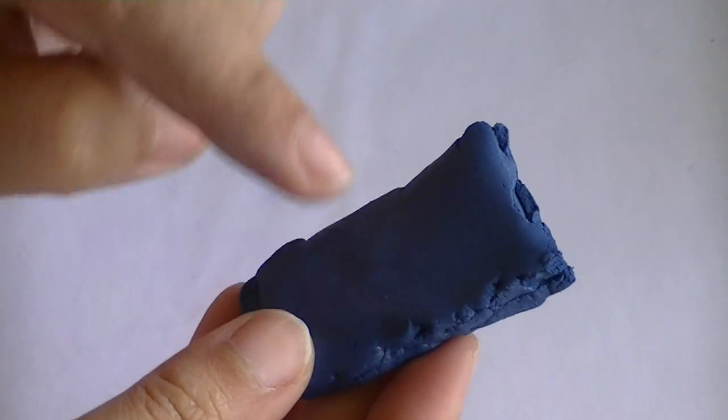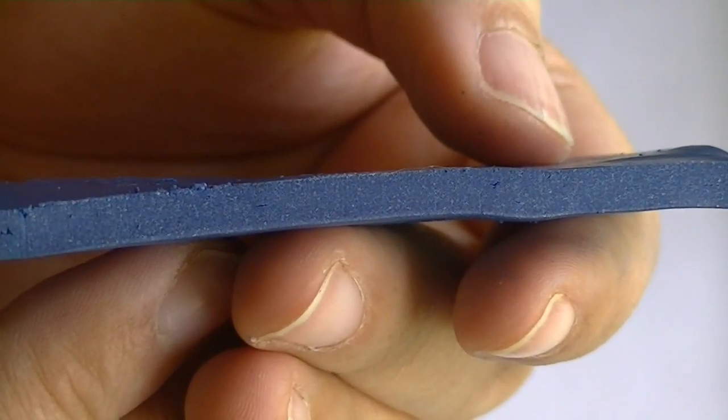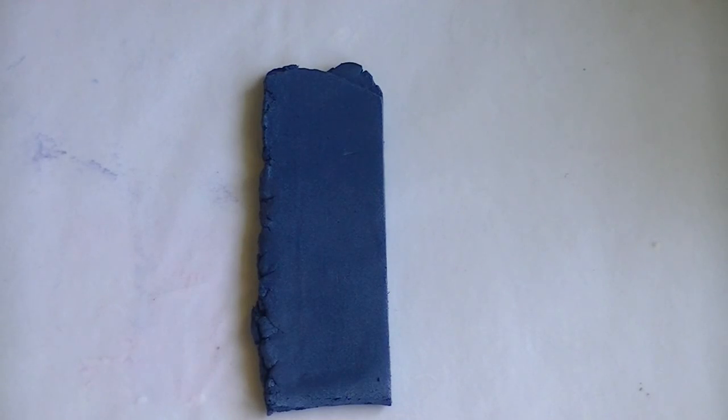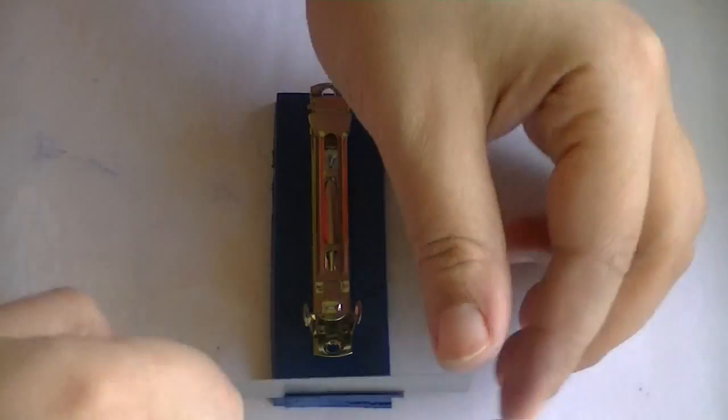The first thing you're going to do is roll out your blue clay into a thick sheet. This thickness should do. Now from this piece, you're going to cut a big rectangle and make sure that it's long enough to pass your clip. There you go.